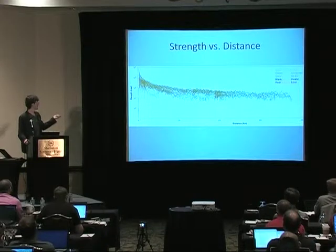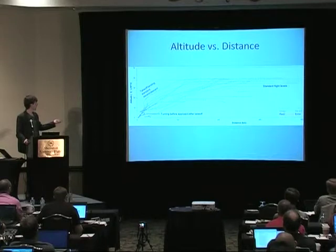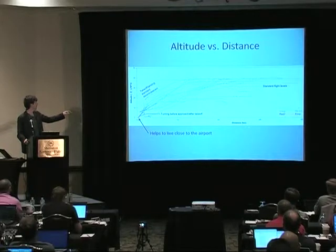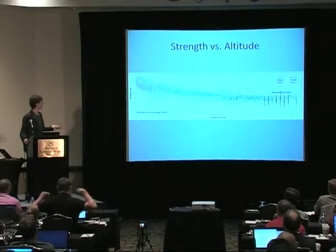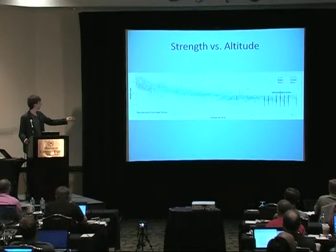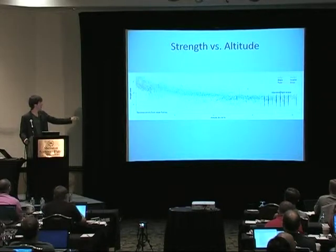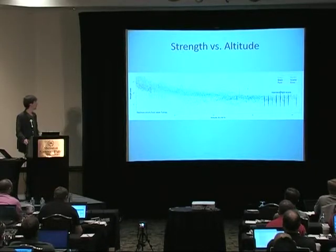You can also create cool plots — for instance signal strength versus distance, where you can see the close ones are very loud and they gradually drop off. Another interesting one is altitude versus distance, where you can see aircraft taking off and climbing into the sky, then reaching their standard flight levels. Additionally there's strength versus altitude, showing a combination of those two, with standard flight levels coming out at around 34,000 to 42,000 feet.